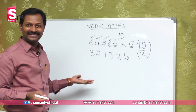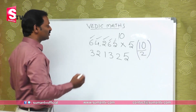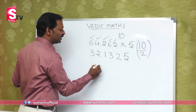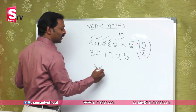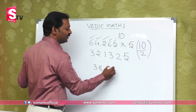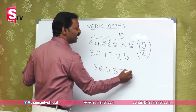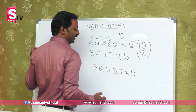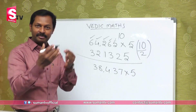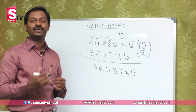The answer is 3,21,325. Now suppose 38,437 is multiplied by 5. Again, 5 means 10 by 2, so we divide by 2 from left to right.